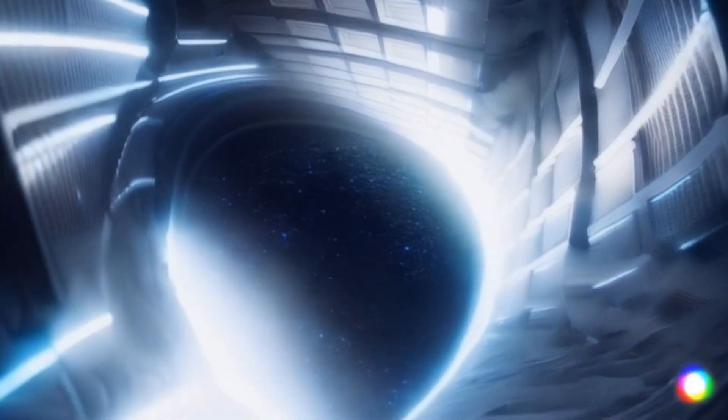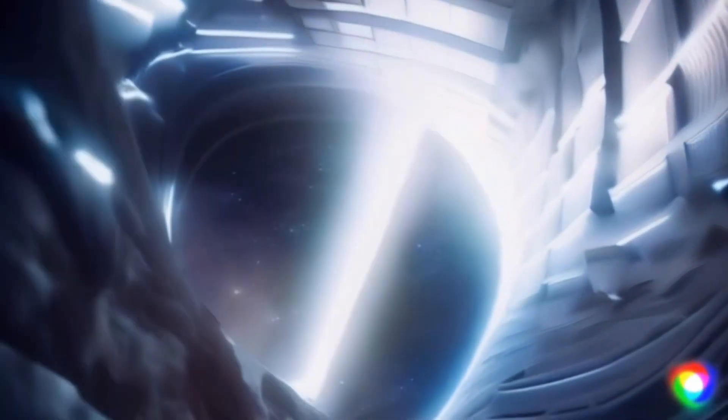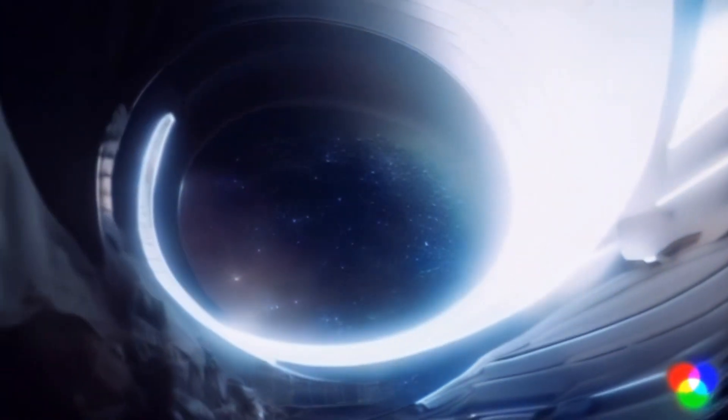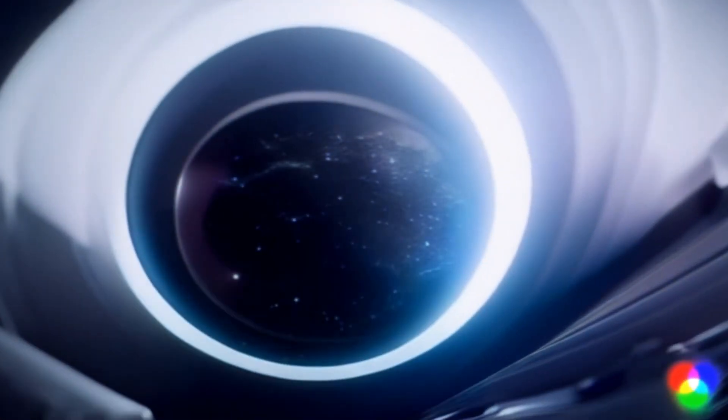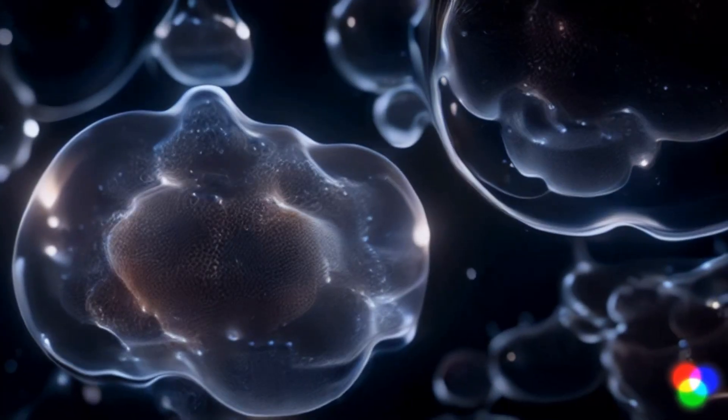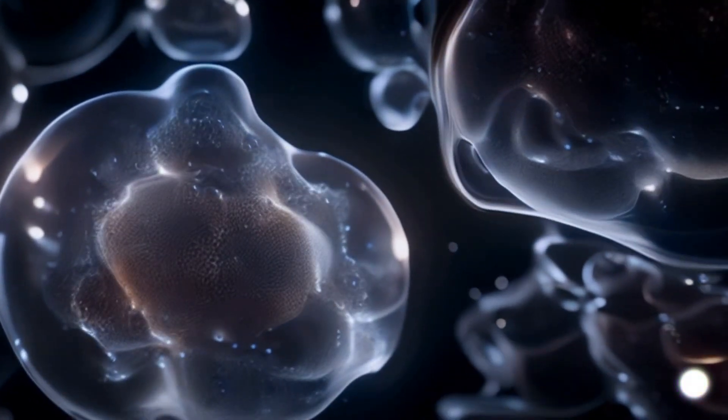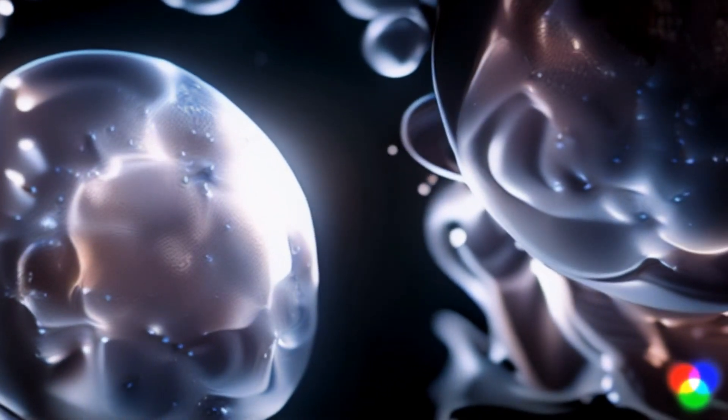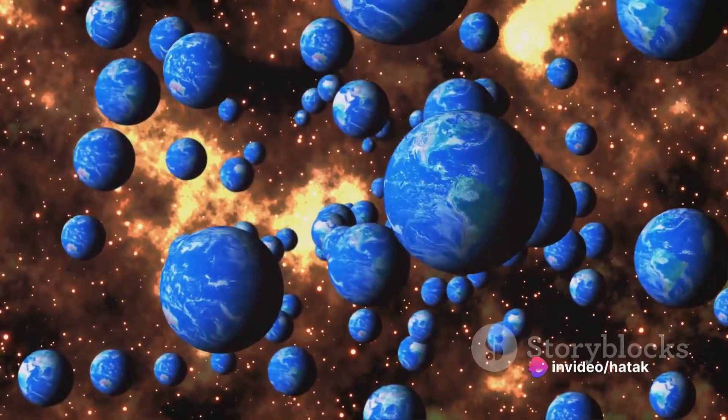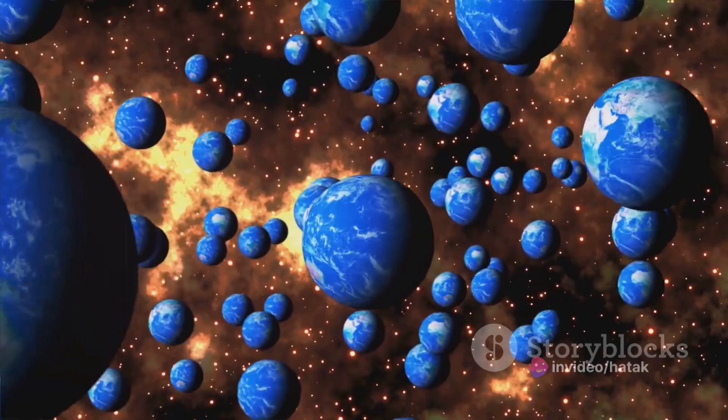So if this theory holds, what does it mean for you and your loved ones? Well, it suggests that the seemingly random events of our lives are just the branches we've taken in this vast cosmic tree. Every decision, every chance encounter, every brush with death could have played out differently in another reality. So each of us is living a multitude of lives across countless parallel worlds.